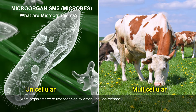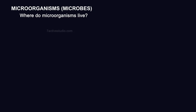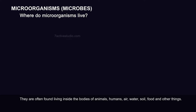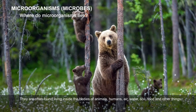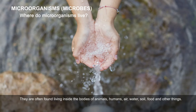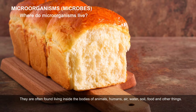Microorganisms were first observed by Anthony van Leeuwenhoek. Where do microorganisms live? Microorganisms may thrive in a variety of environments, including arctic temperatures, hot summers, deserts, and marshy, muddy plains. They are often found living inside the bodies of animals, humans, air, water, soil, food, and other things.